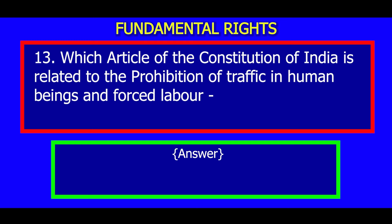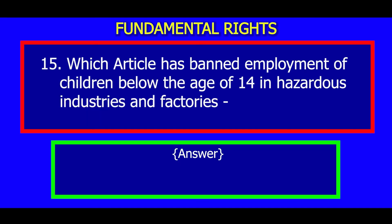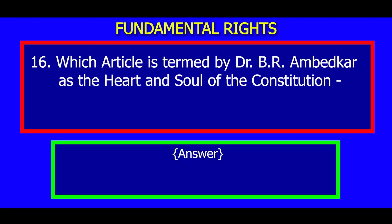Number 13: Which article of the Constitution of India is related to the prohibition of traffic in human beings and forced labor? Answer: Article 23. Number 14: What is the minimum permissible age for employment in any factory or mine? Answer: 14 years. Number 15: Which article has banned employment of children below the age of 14 in hazardous industries and factories? Answer: Article 24.